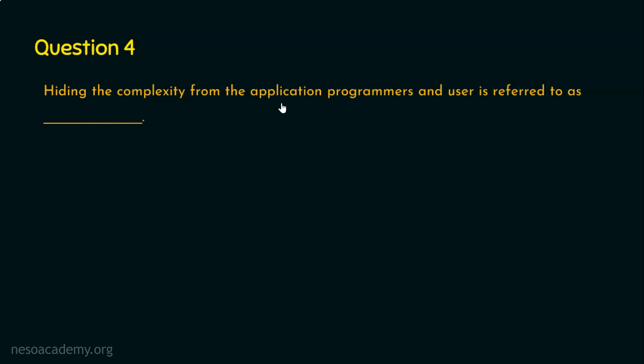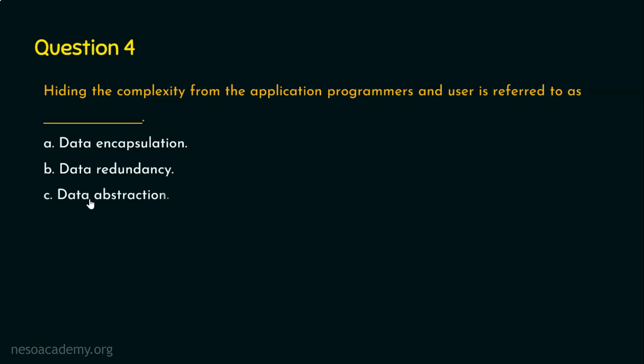We are done with question number three. Let's now move on to question number four. The question is: hiding the complexity from the application programmers and users is referred to as what? The options are: option A, data encapsulation; option B, data redundancy; option C, data abstraction; and option D, data analytics. Data abstraction is the right answer because data abstraction is the concept that hides the complexity from the application programmers and also from the users accessing the database systems. We want simplicity — we don't want complex details to be shown, so we are hiding the complexity through data abstraction.